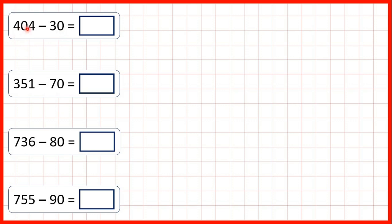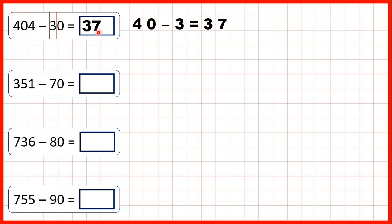First, we have 404 minus 30. Because we're not subtracting any ones, we know that our ones digit is going to stay the same in our answer, so the ones digit will be 4. But if we ignore our ones digit, we have 40 minus 3. 40 minus 3 is 37, and then the 4 stays the same because we're subtracting zero ones, so that gives us 374 as our answer.